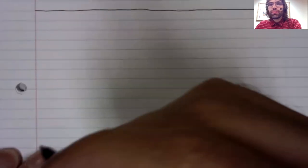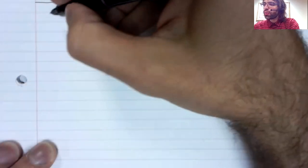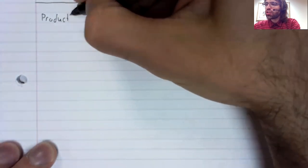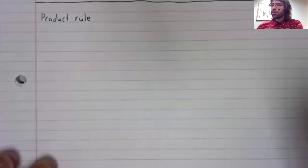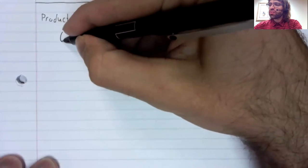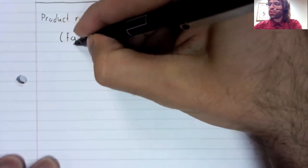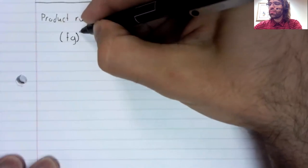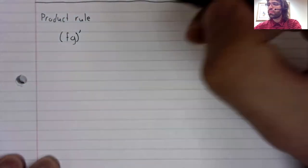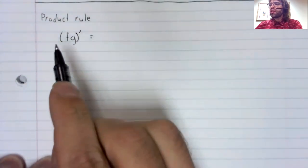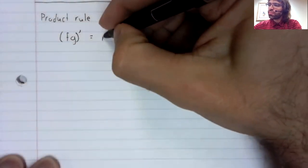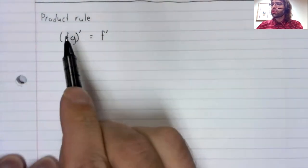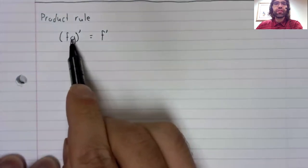Instead, we have the following: the product rule. The product rule says that if we're differentiating a product, we differentiate one of these functions and multiply it by the second function.